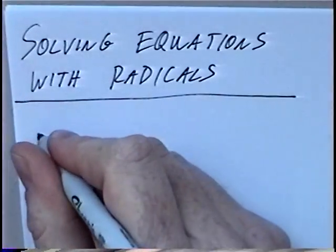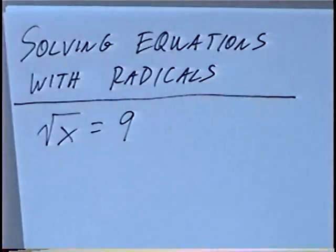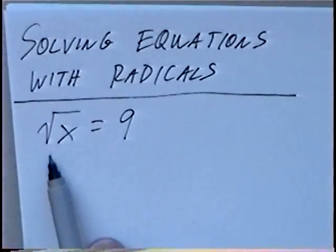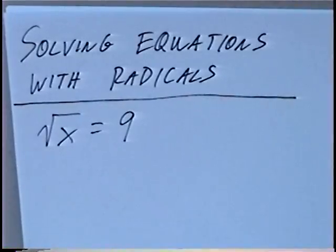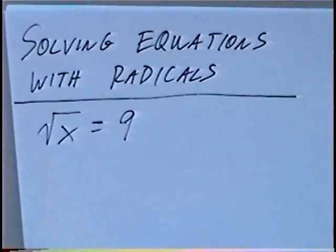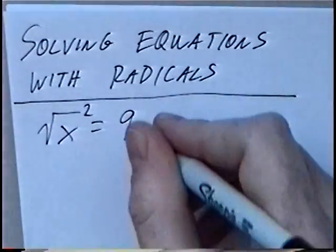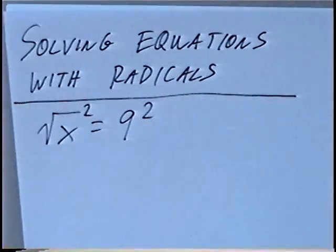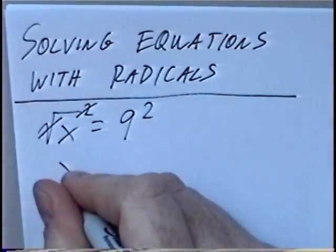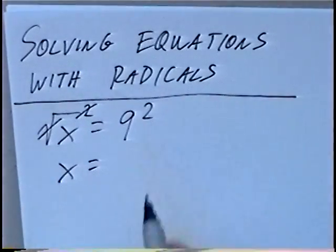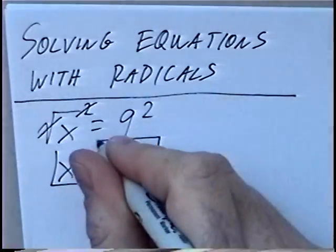First question is radical x equals 9. To cancel out that radical or square root, we do the opposite — the opposite of taking a square root is to square — and we put a square on both sides. The square root and square will cancel, leaving us with x, and 9 squared would be 81. So x equals 81.